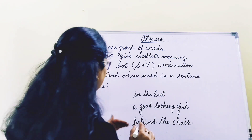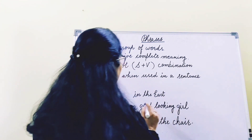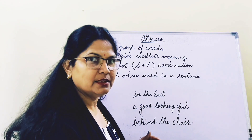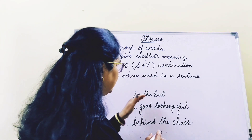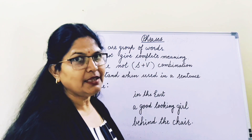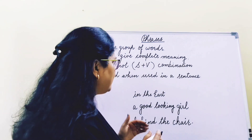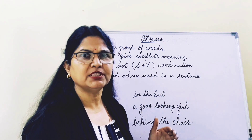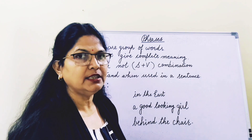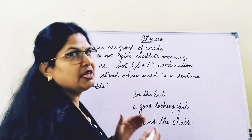So this you can understand with a couple of examples. Here I have written 'in the east.' You see, 'in the east' is a group of words — there are three words: in, the, and east. But is it giving a meaning? No, it's not giving a complete meaning. We can understand that something we are talking about the direction east, but what exactly we are talking is not clear.